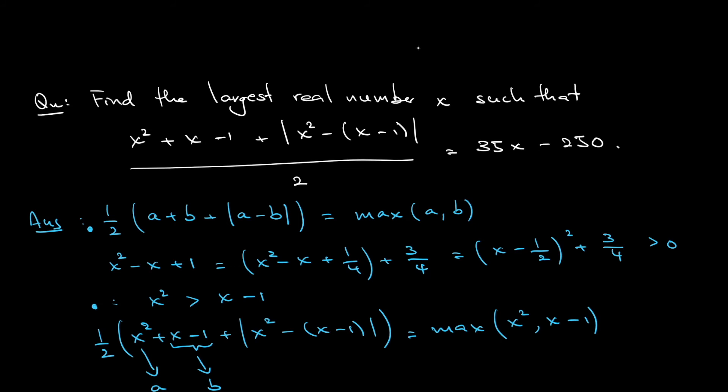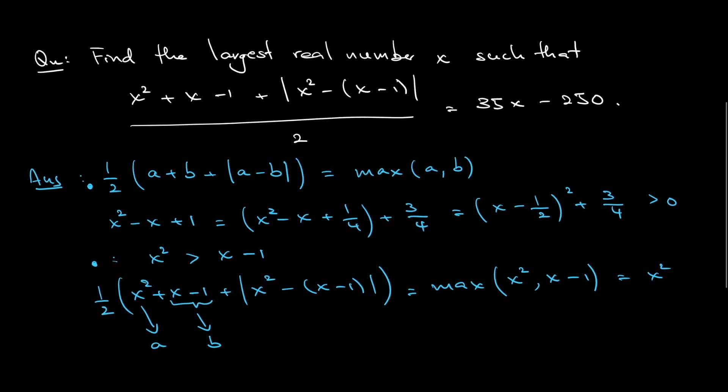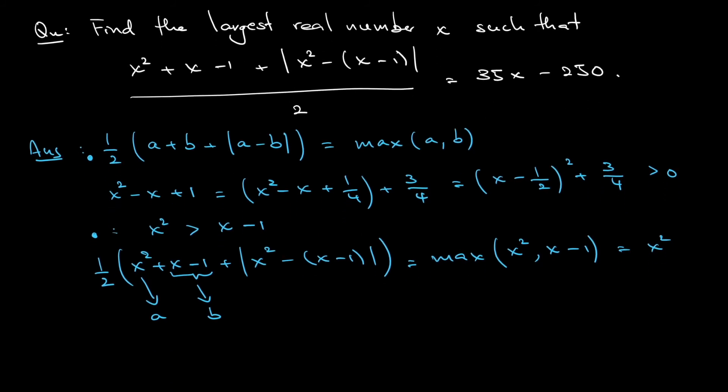So the maximum of x squared or x minus 1, in fact, is x squared because x squared is always the larger number. That means the equation becomes: the left-hand side is just x squared is equal to 35x minus 250.